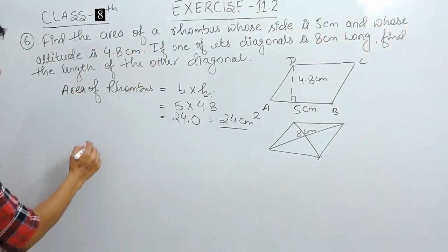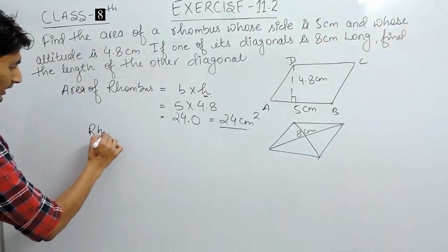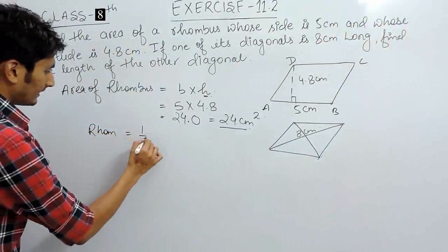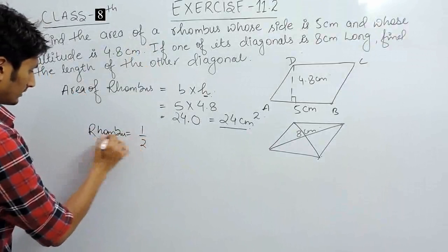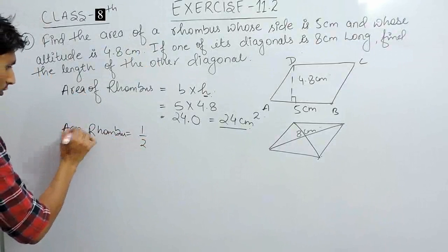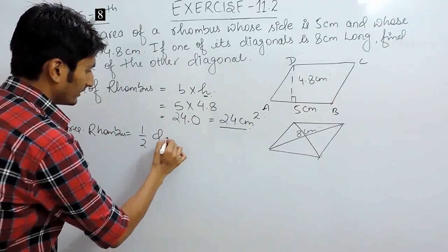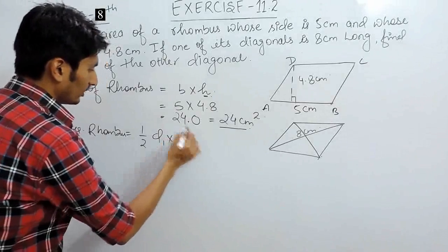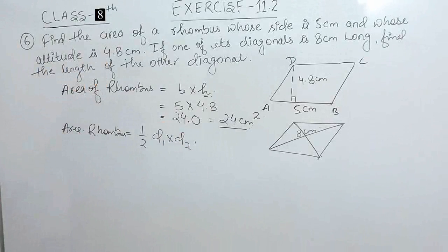We know that there is another formula for the rhombus. So, the area of the rhombus is basically half product of its diagonals or you can say half d1 into d2.